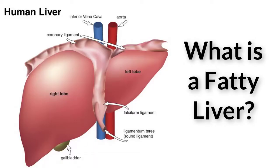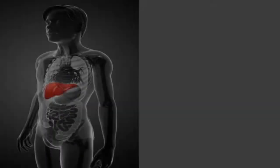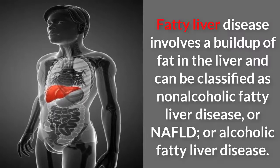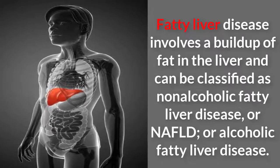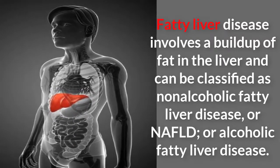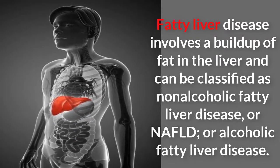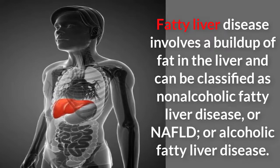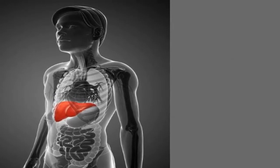What is a fatty liver? Fatty liver disease involves a buildup of fat in the liver and can be classified as non-alcoholic fatty liver disease, or NAFLD, or alcoholic fatty liver disease. Most individuals with NAFLD experience no complications, but there is a more severe form of the disease called non-alcoholic steatohepatitis, the Mayo Clinic explains. Symptoms of NAFLD include stomach pain in the upper right quadrant, fatigue, and weight loss.